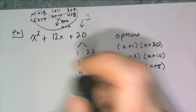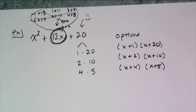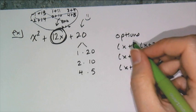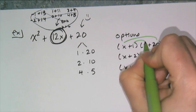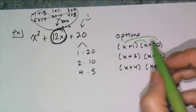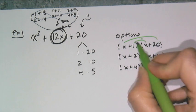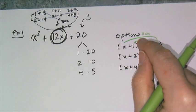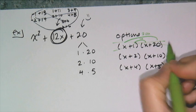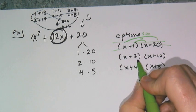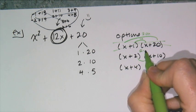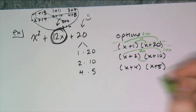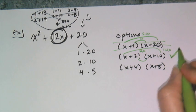And so now this is where that 12 comes into play, because I have to remember that the 12 is generated from that outer and inner multiplication being added together. And so the inner multiplication here is 1x and the outer multiplication here is 20x. And that gives me 1x plus 20x, or 21x. So it's not that one. And if I look at this one, inner gives me 2x, outer gives me 10x. When I add them together, oh hey, that's 12x.